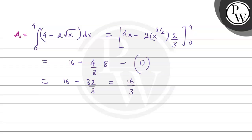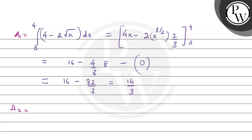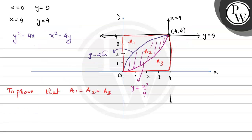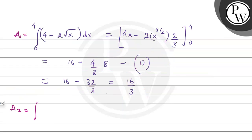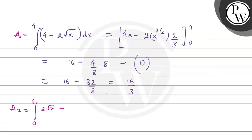So the value of A1 has come out. Now let's find the value of A2. A2 is the region bounded by the two curves: y equals 2 times square root x and y equals x squared by 4. Area A2 is equal to the integral from 0 to 4, where the upper boundary is y equals 2 root x and the lower boundary is x squared by 4, so A2 equals integral from 0 to 4 of (2 root x minus x squared by 4) dx.